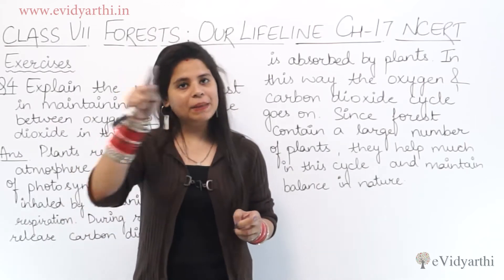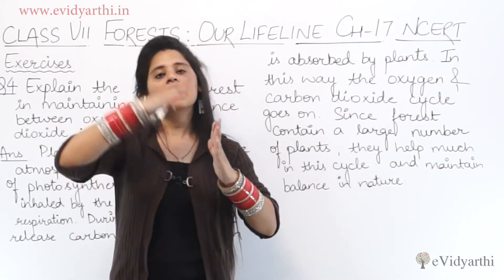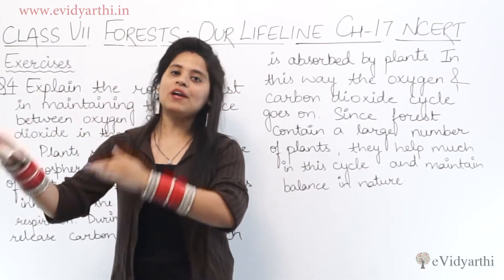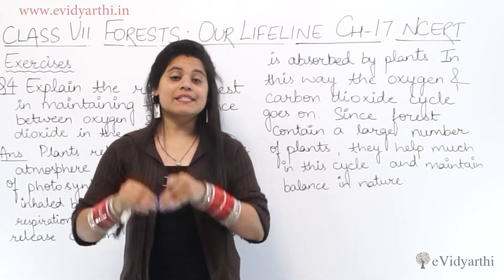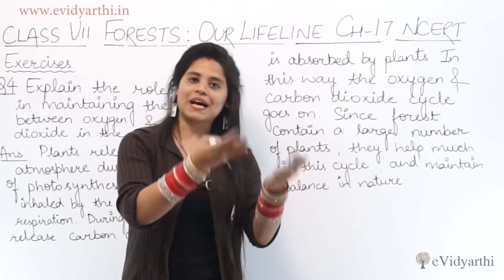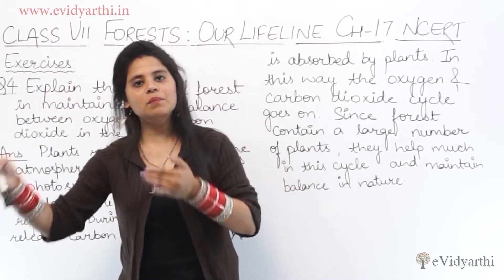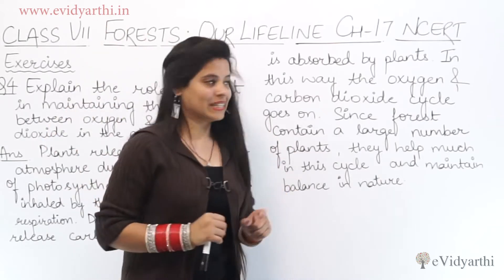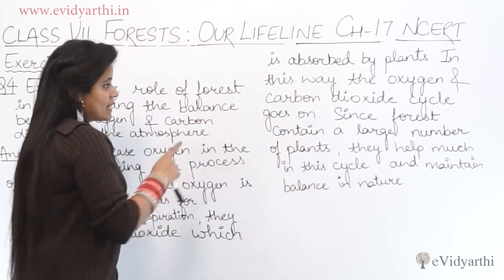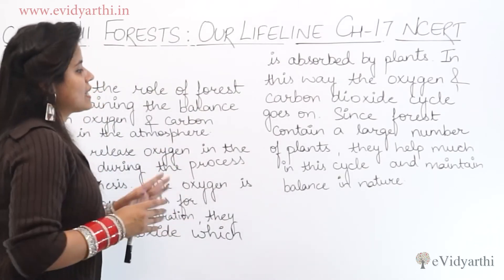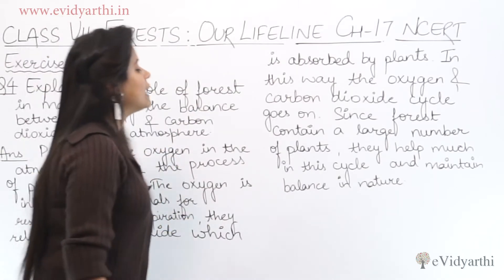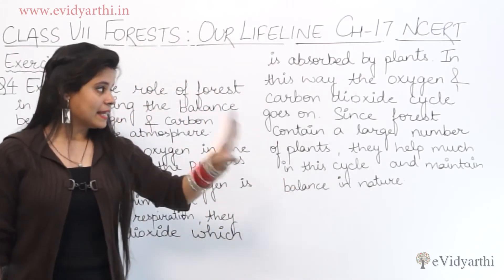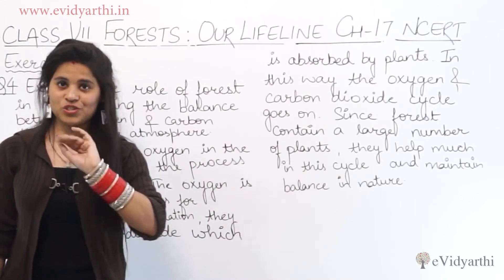So, a cycle is formed here: first plants release oxygen, then animals use that oxygen and release carbon dioxide, and then plants use that carbon dioxide — oxygen, animal, carbon dioxide, plant. In this way, a complete circle is formed. In this way, the oxygen and carbon dioxide cycle goes on. Since forests contain a large number of plants, they help much in this cycle and maintain balance in nature.